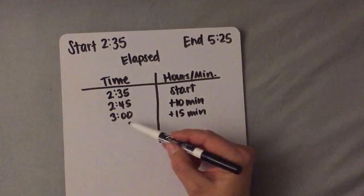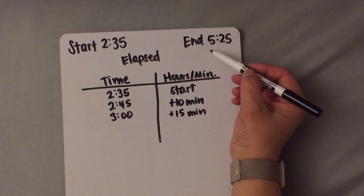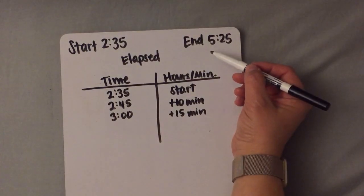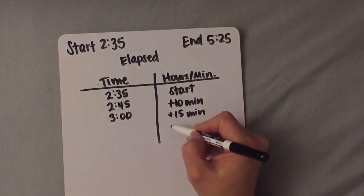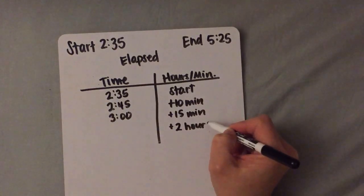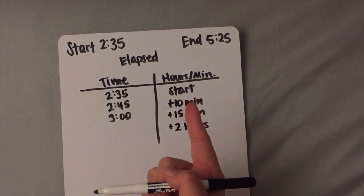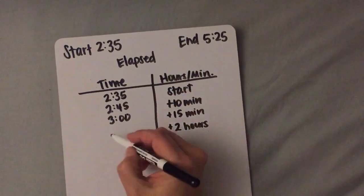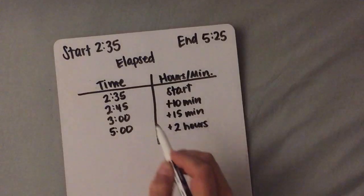Now that I'm at 3 o'clock, I look back at my end time and I can go all the way to 5:25, or at least 5 o'clock. From 3 to 5 there are 2 hours, so I am going to add 2 hours. 3 o'clock to 4 o'clock is 1 hour and then 4 o'clock to 5 o'clock is the next hour. So if I add 2 hours, it will be 5 o'clock.